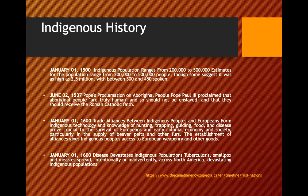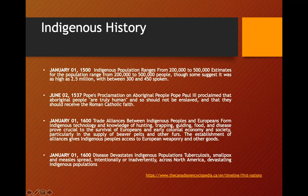Indigenous History. I'm going to randomly pick some important points rather than reading the whole material. As of January 1st, 1500, the Indigenous population ranged from 200,000 to 500,000, with some estimates as high as 2.5 million. There were between 300 to 450 spoken languages. In 1600, diseases devastated Indigenous populations — TB, smallpox, and measles spread intentionally or inadvertently across North America.